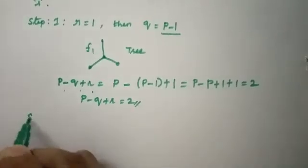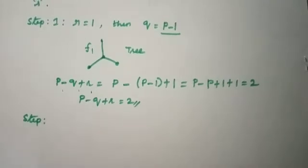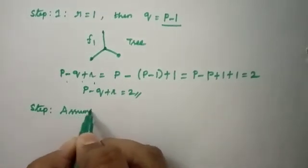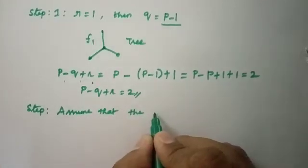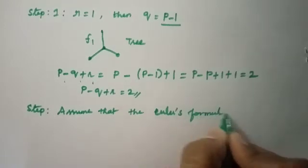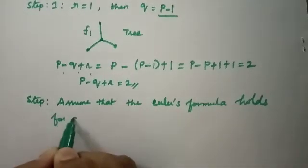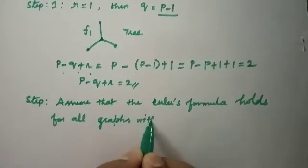Next, we assume that the Euler's formula holds for all graphs with less than R faces. This is our induction hypothesis. We assume the formula holds for any graph with fewer than R faces, and in step 3 we need to prove it holds for R faces as well.